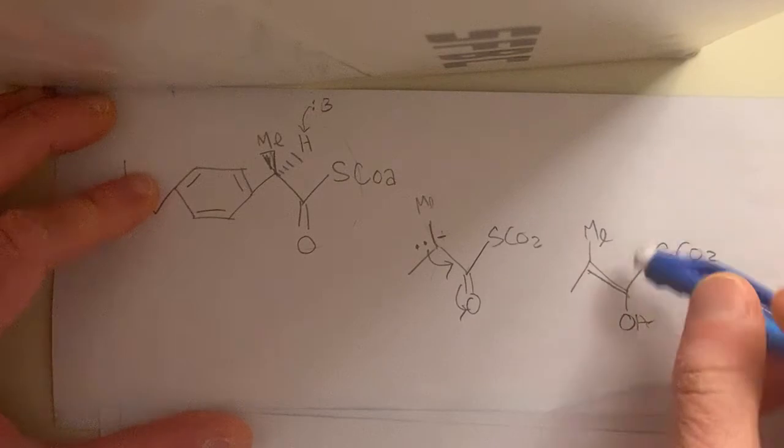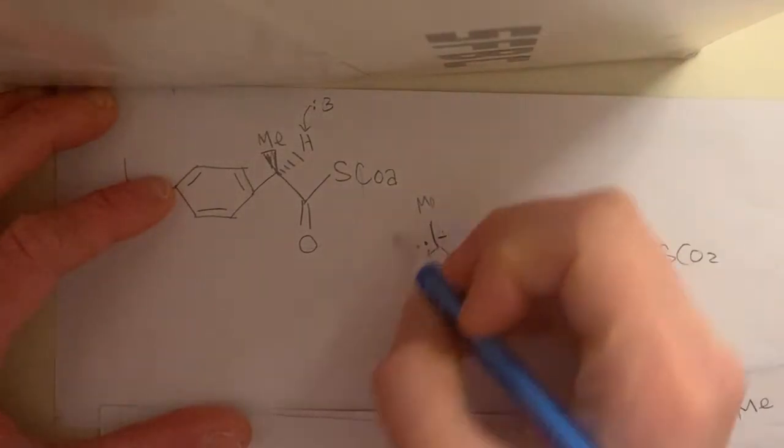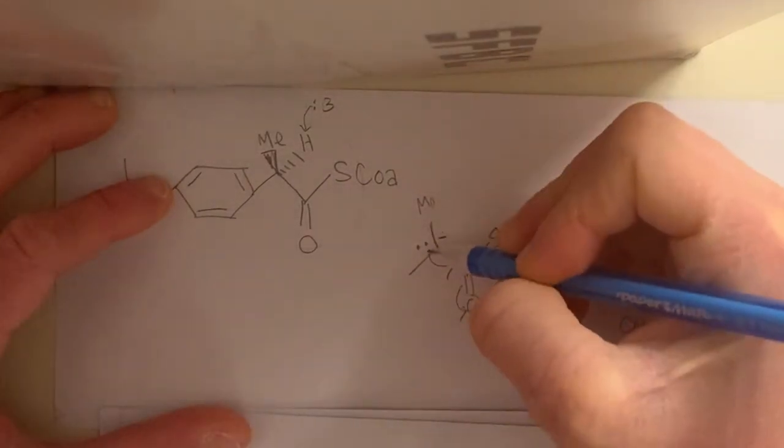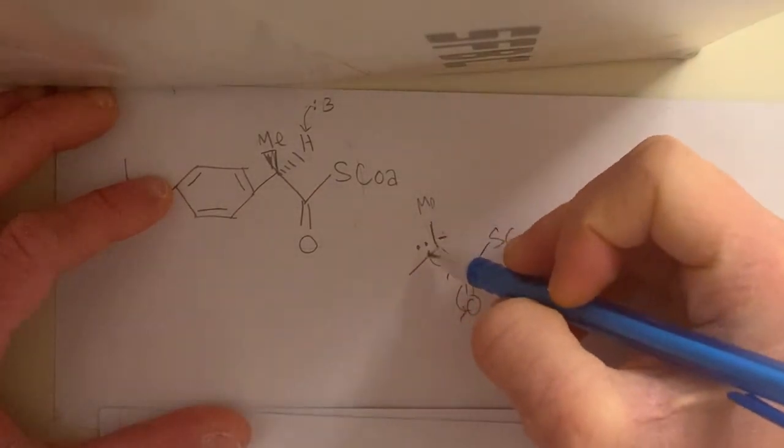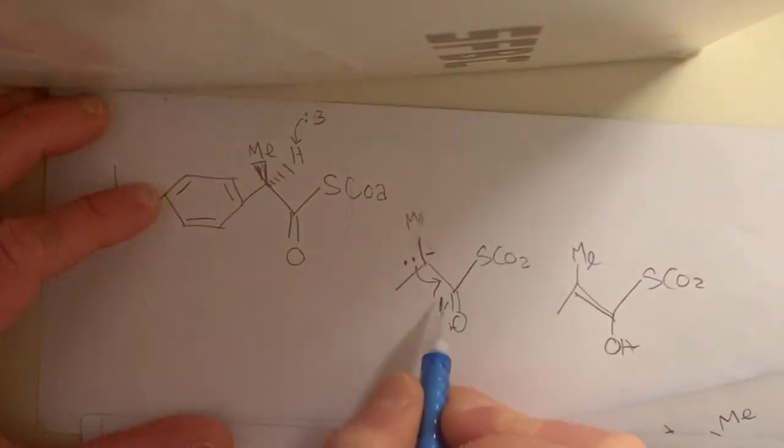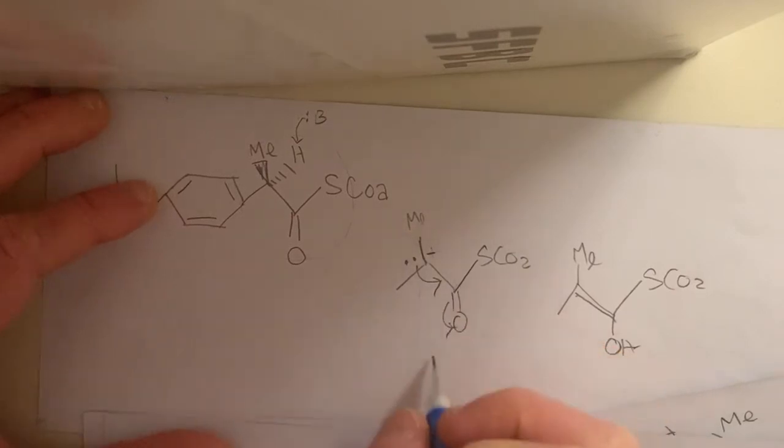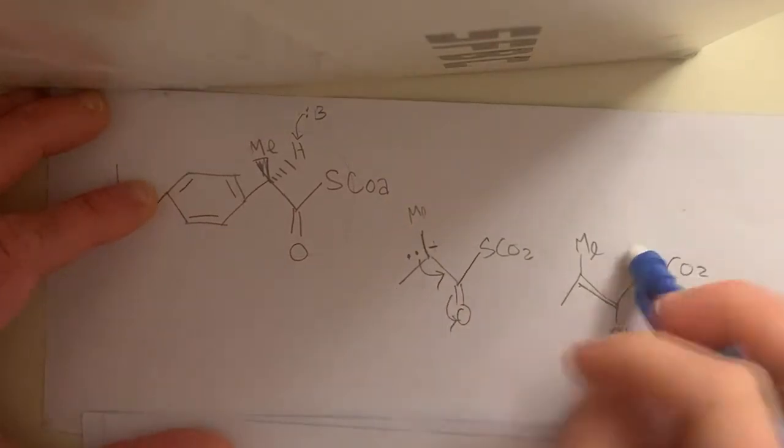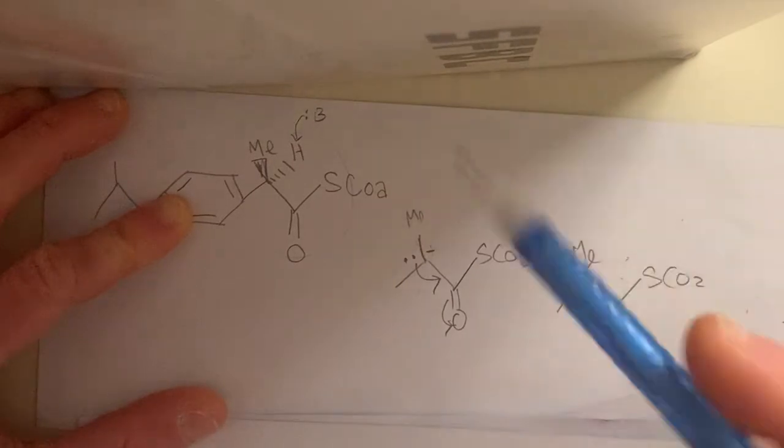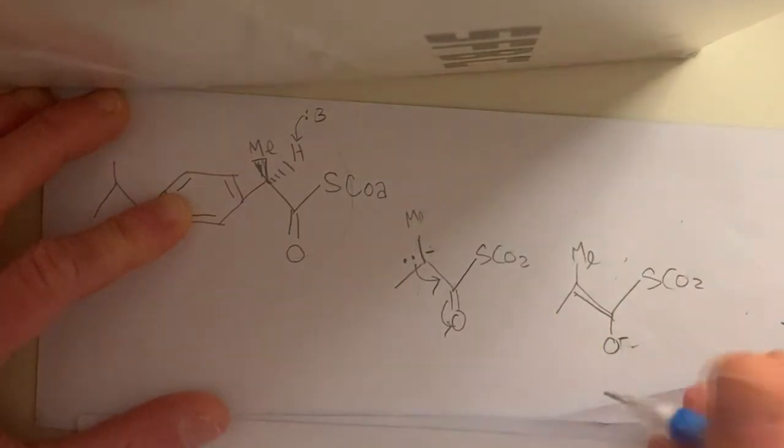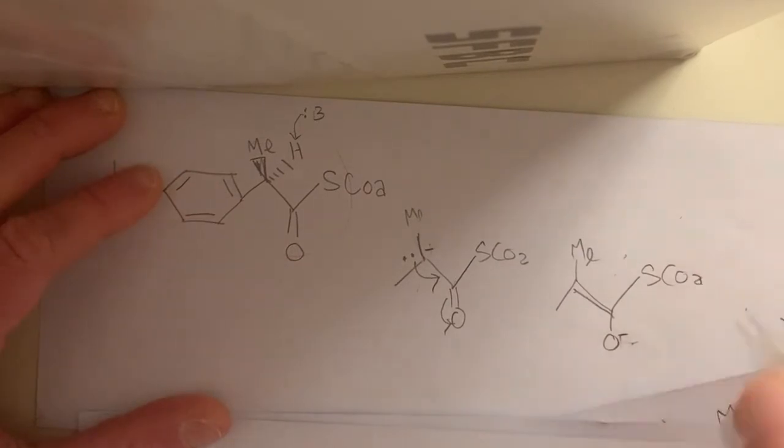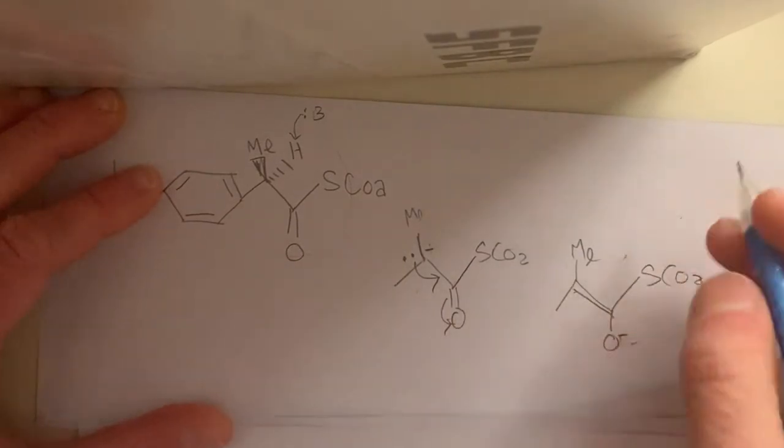And so the oxygen is going to, what you get is you can have this, this pair of electrons. If we do this arrow pushing, go and make a double bond here. And then that goes to the oxygen, and then so you have an O- and that can get protonated to give you the OH. And so, but, so this is our enol.